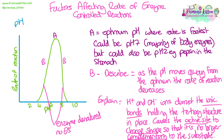Be really specific with your language here. If we're talking about pH, we have to mention ionic bonds being disrupted. We have to mention the active site changing shape and therefore it's no longer complementary to the substrate, so no more ES complexes are going to form.